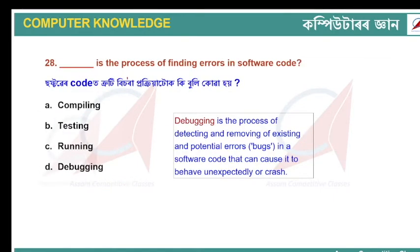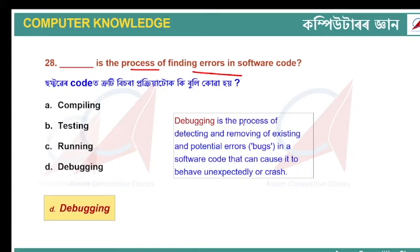Debugging is the process of finding errors in software code. Debugging is the process by which errors or bugs are detected and removed. That process is called debugging — detecting and removing the bugs.